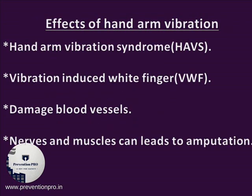Hand-arm vibration syndrome, also known as vibration-induced white finger, occurs when hand-arm vibration damages blood vessels in the hands and fingers, reducing the flow of blood and harming the skin, nerves, and muscles, and can lead to amputations.